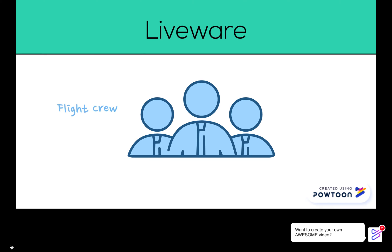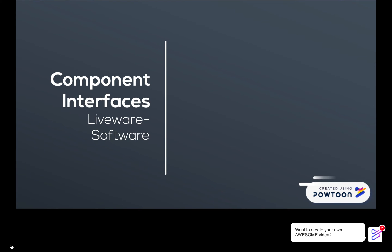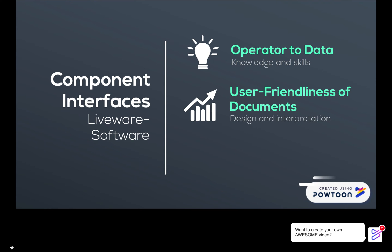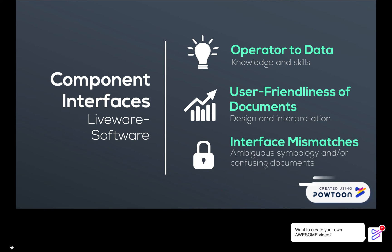The interactions between the primary liveware and secondary liveware are important. The flight crew must interact with ground crew, ATC, and management in order to operate a safe flight. Liveware to software is the interaction between operator and data, and includes knowledge and skills. It relies on the user-friendliness of documents like the design and interpretation of maps and charts.